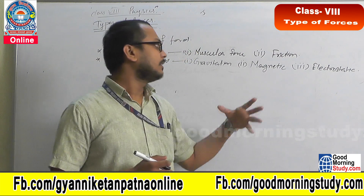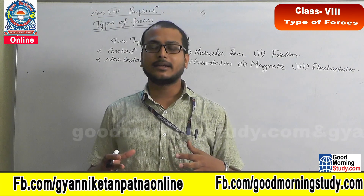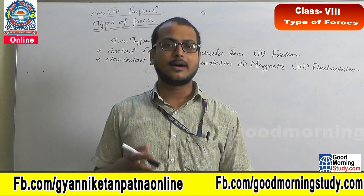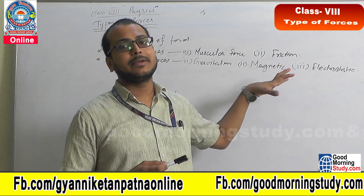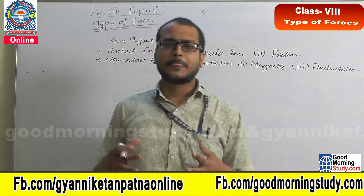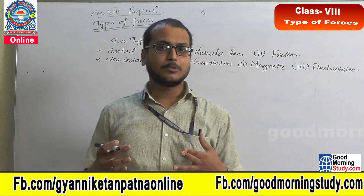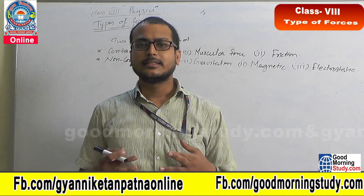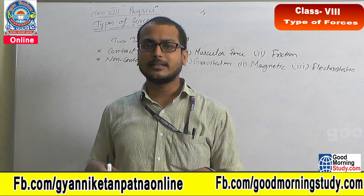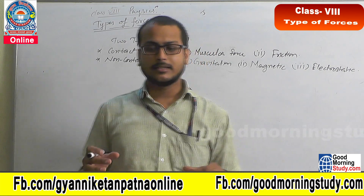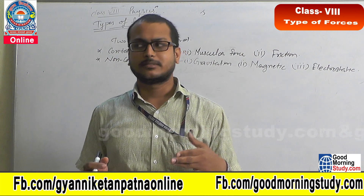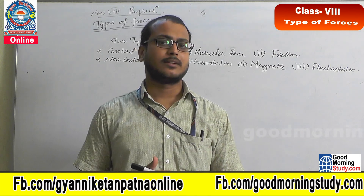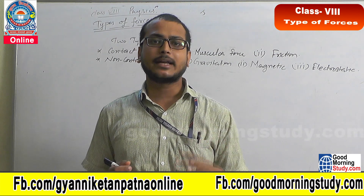Magnetic force — in class 6, you have read about magnetism. It is a force by which magnetic substances, namely iron, cobalt, nickel, and steel, are attracted towards a magnet. This force is both attractive and repulsive in nature. When two magnets have like poles facing each other — north-north or south-south — there is repulsion. When opposite poles face each other — north and south — there is attraction. All other magnetic substances are always attracted by a magnet.